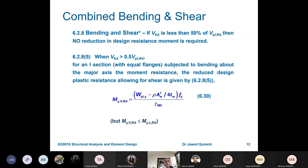Combined effect of bending and shear. V_ED over V_PL,RD if it is less than 0.5 or 50 percent, no reduction in moment is required. Which is the case for most of the beams that we use in buildings.